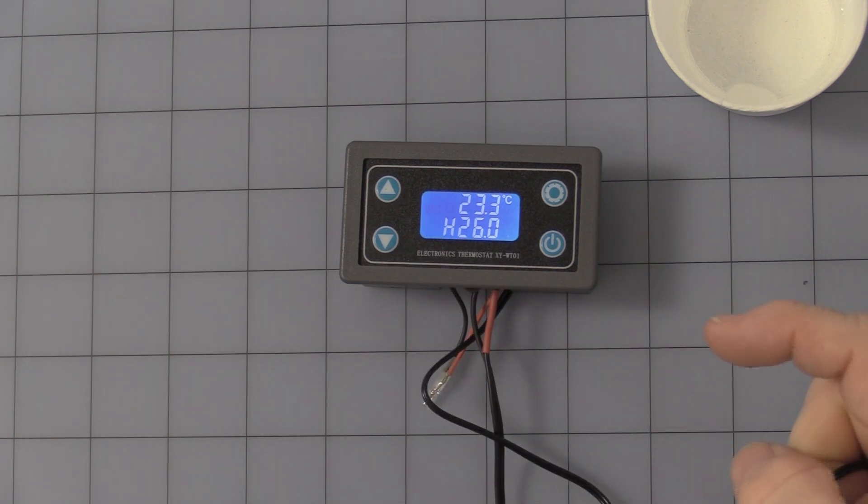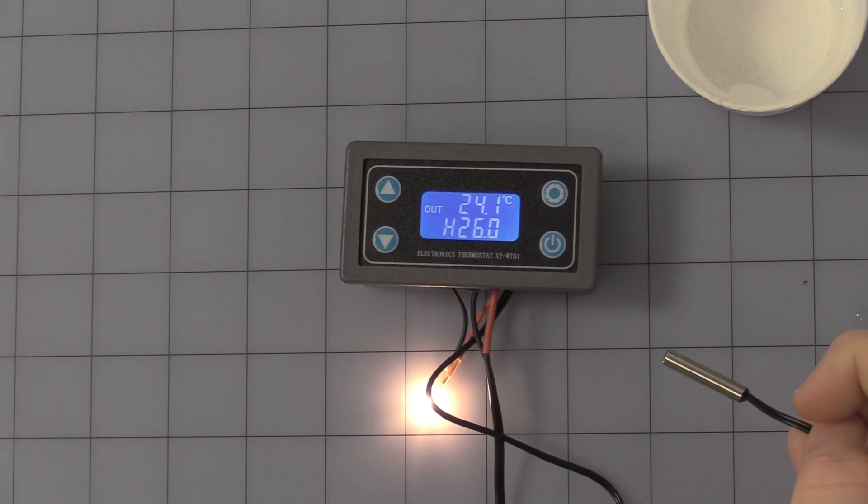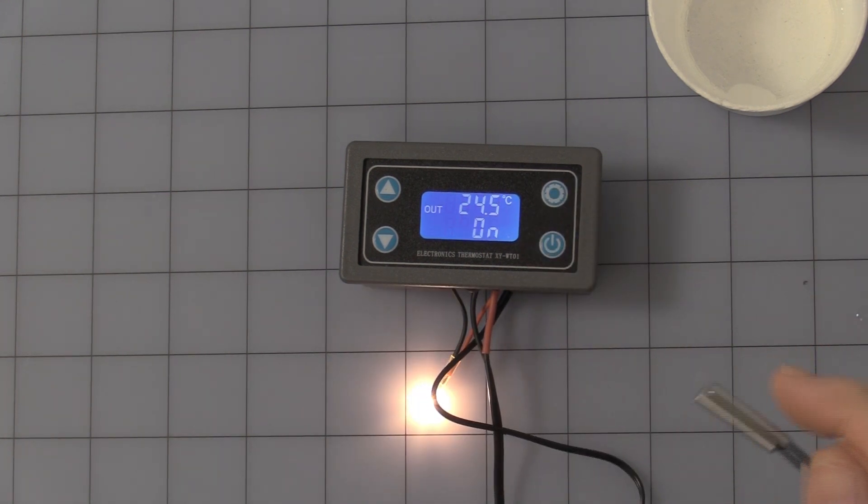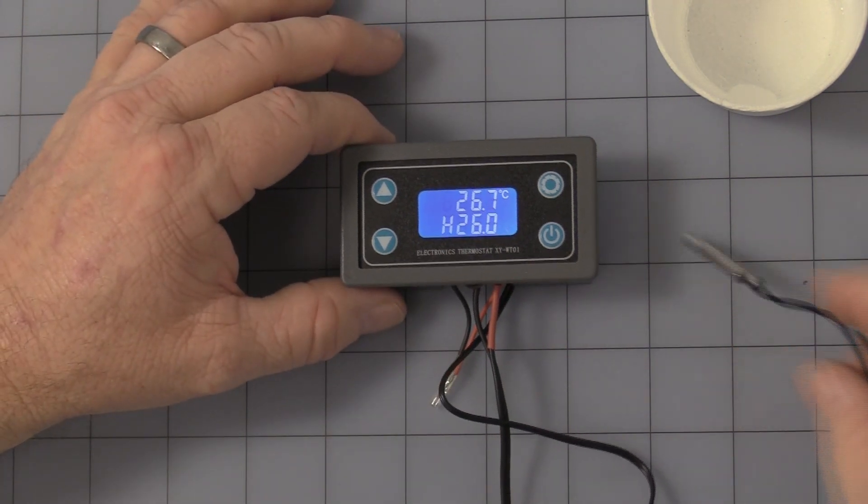And you see that the output is still flashing. That means as soon as you turn it back on, the relay will activate again. So the unit is back on. Now you can turn it off at any time, turn it right back on. Okay, that is the heating mode.